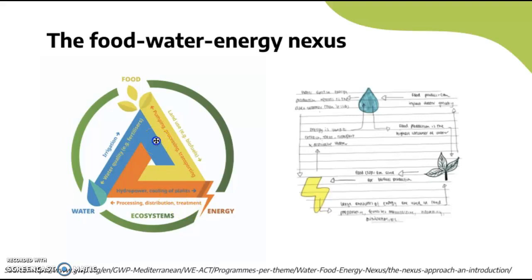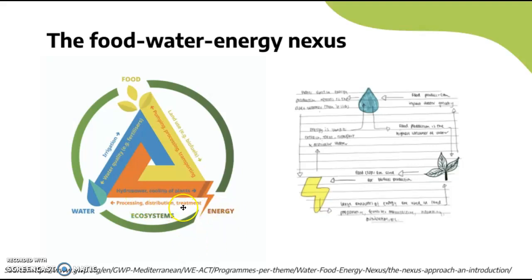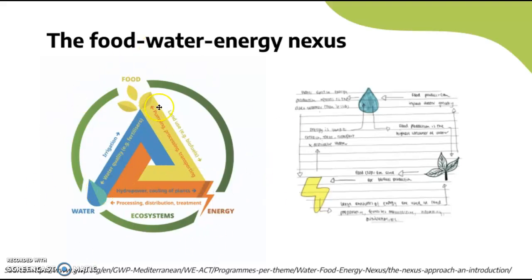Starting from food: food to energy involves land use such as biofuels. From energy to food, we have pumping, processing, and transporting of food. From energy to water, processing, distribution, and treatment of water all use energy. Energy also uses hydropower and cooling of plants. From water to food, there's irrigation going into food production. From food to water, water quality is impacted by things like fertilizers, which can affect water sources and availability. They very much all interlink with one another.